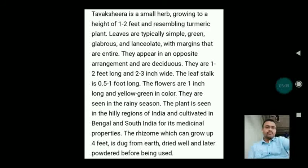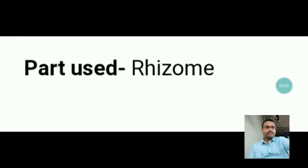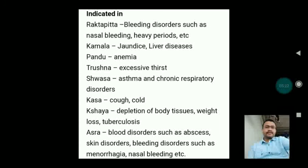The rhizome, which can grow up to 4 feet, is dug from the earth, dried well and later powdered before being used for medicinal purposes. The part used is the rhizome. Indications are Rakta Pitta (bleeding disorders such as nasal bleeding and heavy periods), Kamala (jaundice and liver diseases), Pandu (anemia), Trishna (excessive thirst), Shvasa (asthma and chronic respiratory disorders), Kasa (cough and cold), Kshaya (depletion of body tissues, weight loss, tuberculosis), and Rakta disorders such as abscesses, skin disorders and bleeding disorders including menorrhagia and nasal bleeding.